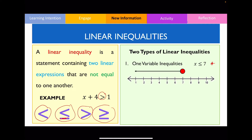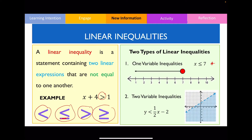There's another type of linear inequality referred to as a two variable inequality — two variable meaning it contains two letters. When you plot the solution for this particular linear inequality, it is plotted on a Cartesian plane and will produce a straight line. We will learn about this type more in a later video.